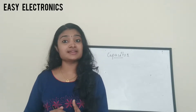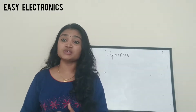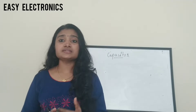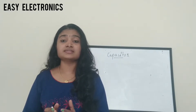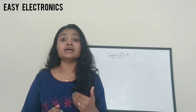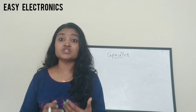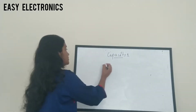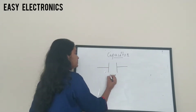Hello and welcome to Easy Electronics. Today's class we are going to discuss about capacitors. Capacitors are two-terminal electronic components which are used for storing electric charge. Capacitors are generally formed by placing two parallel plate metal conductors separated by a medium of insulator. This insulator can be mica, quartz, paper, air, ceramic, or anything which doesn't conduct electricity.